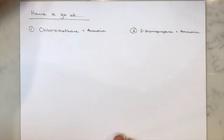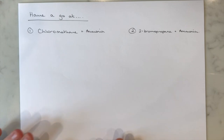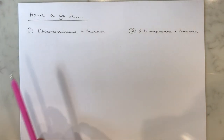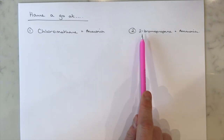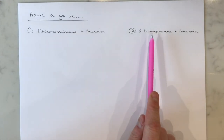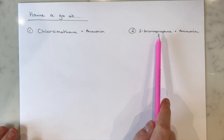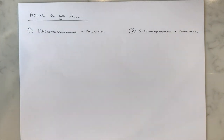Have a go at drawing out the nucleophilic substitution mechanism using ammonia with chloromethane and with 2-bromopropane. Have a go at naming the products as well — the second one is a little trickier to name. Pause the video and have a quick go at those.